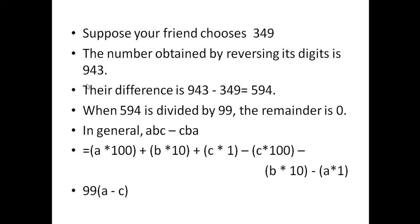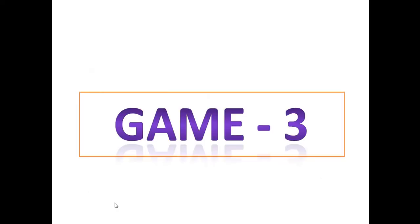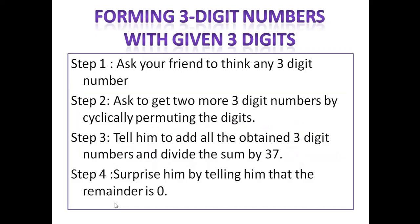In general form, abc minus cba is written out. After solving, you get 99×(a−c). So whatever three-digit number you take, this difference is always a multiple of 99, and dividing by 99 leaves remainder 0.